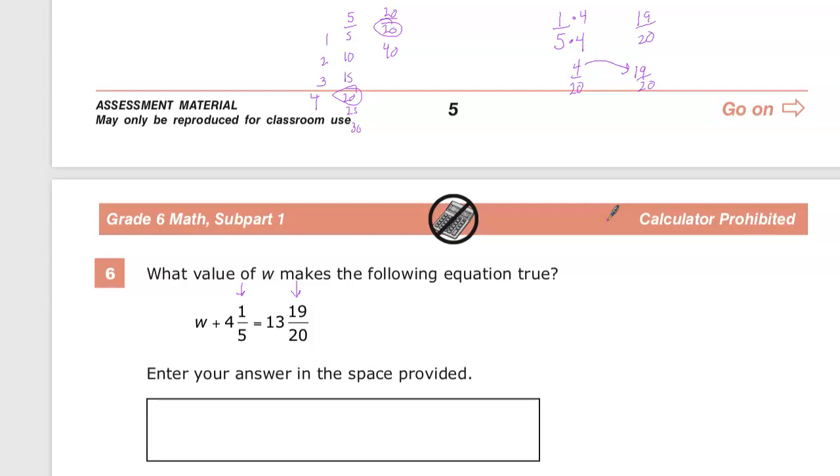So there's a couple things we could do here. Now that we have it, we could just do 19 minus 4. By the way, the reason why I'm not adding these is because they're on different sides of the equation. If I want to interact between these two things, I'm going to need to do opposite operations.